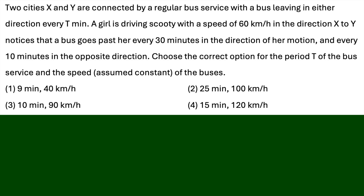Hello students, welcome to our channel Success Achievers. Today we are going to solve one question from NEET 2025. Two cities X and Y are connected by a regular bus service with a bus leaving in either direction every T minutes. A girl is driving a scooty at 60 km/h in the direction of X to Y. She notices a bus going past her every 30 minutes in the direction of her motion, and every 10 minutes in the opposite direction. We need to find the period P of the bus service and the speed of the buses.